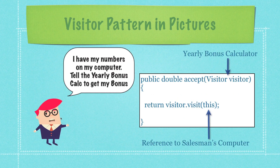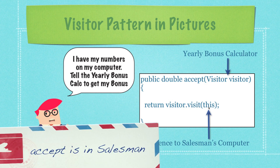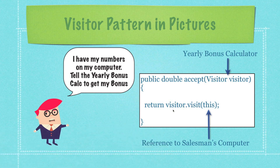Looking at this in pictures: the salesman has his numbers on his computer and tells the yearly bonus person to get his bonus. Here is accept — visitor is going to be the person that calculates the yearly bonus. When passed into the visitor, it is going to receive 'this', which is a reference to the salesman's data containing all the information needed to calculate the bonus.